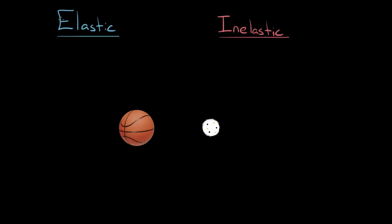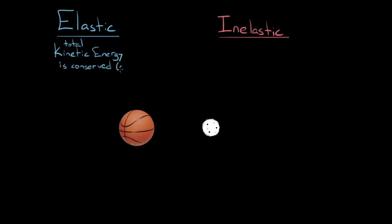So what does it mean to say a collision is elastic? An elastic collision is one where the kinetic energy is conserved — and not just the kinetic energy of one of the objects, but the total kinetic energy of all the objects. That's really just a fancy way of saying the total amount of kinetic energy is constant, i.e., it remains the same value before and after a collision.